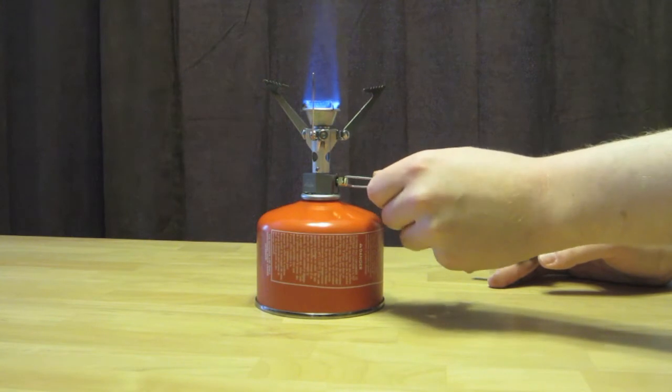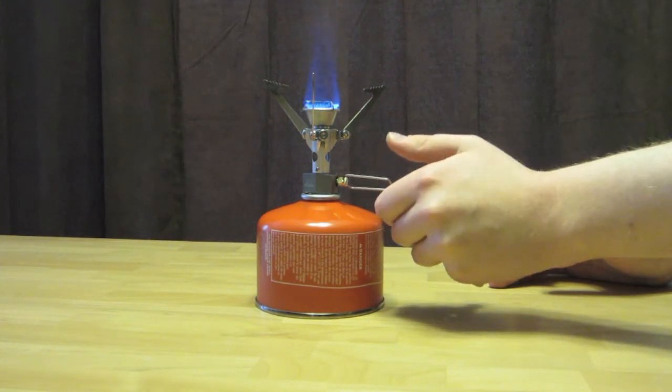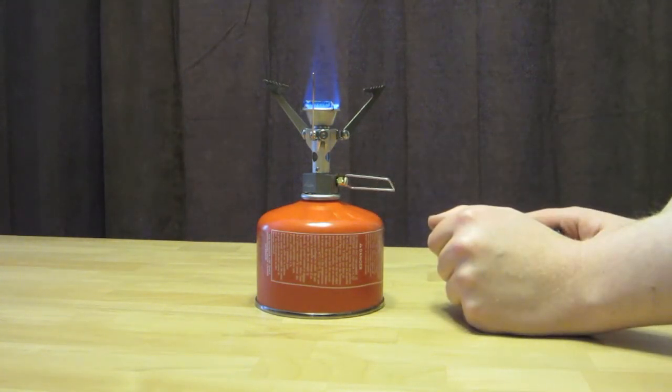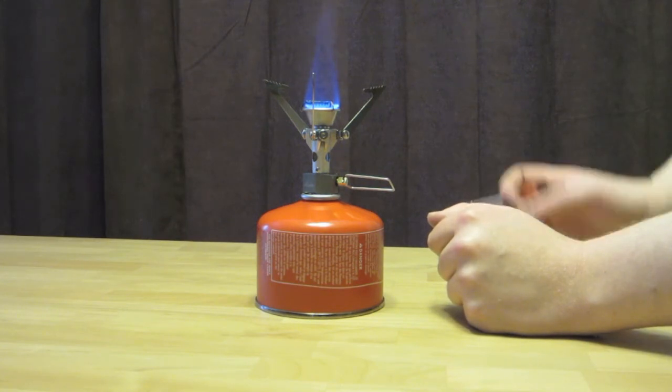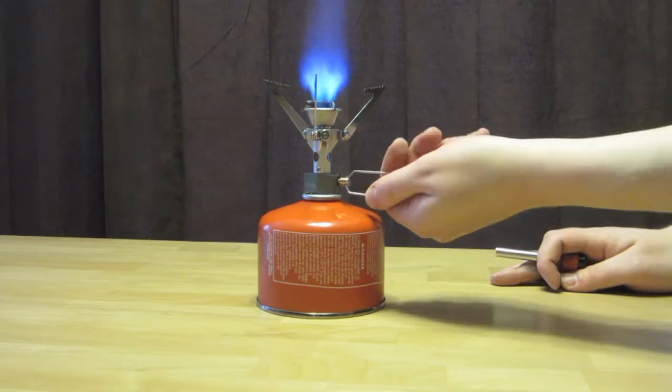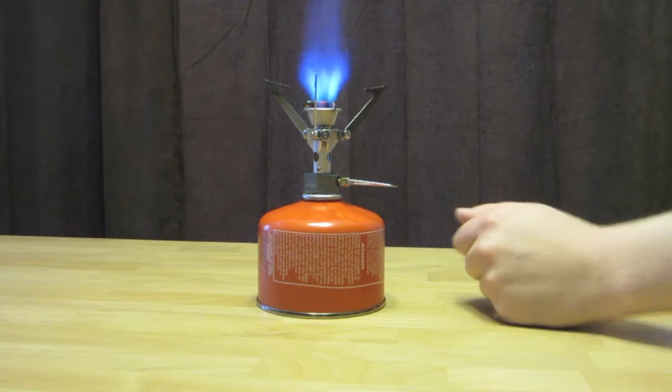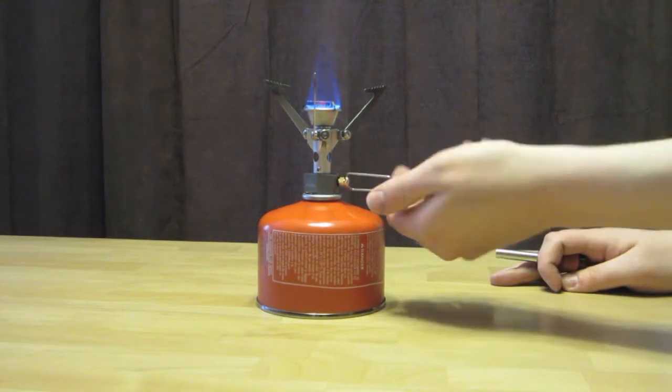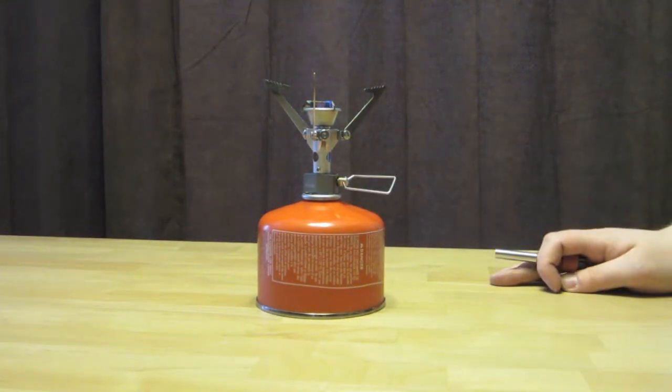And push the button and it'll light right up. So this does have a fairly good simmer on it as well. You can turn it down fairly low. I haven't actually tried out like cooking bacon or anything like that on it but it does seem to go fairly low. Or you can put it up all the way and it'll blast out the top like that. So that's how you light the MSR micro rocket.